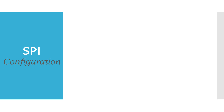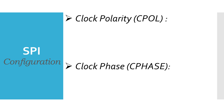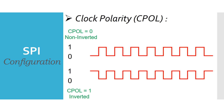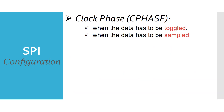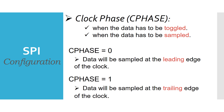Before jumping to actual driver development, let's recall two important parameters: CPOL and CPHASE, which are required to be configured for both master and slave nodes. CPOL describes the clock format. If configured to 0, it refers to the non-inverted clock, meaning the active state of the clock will be 1. If CPOL is configured to 1, it refers to the inverted clock, meaning the active state of the clock is 0. CPHASE describes when the data has to be toggled by the transmitter and sampled by the receiver. If CPHASE is configured to 0, data will be sampled at the leading edge of the clock. If CPHASE is 1, data will be sampled at the trailing edge of the clock.